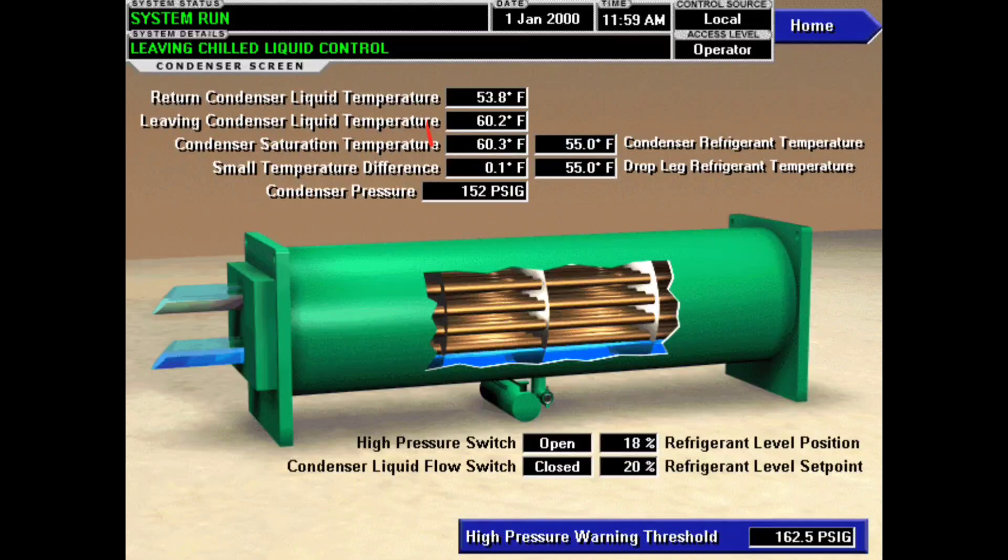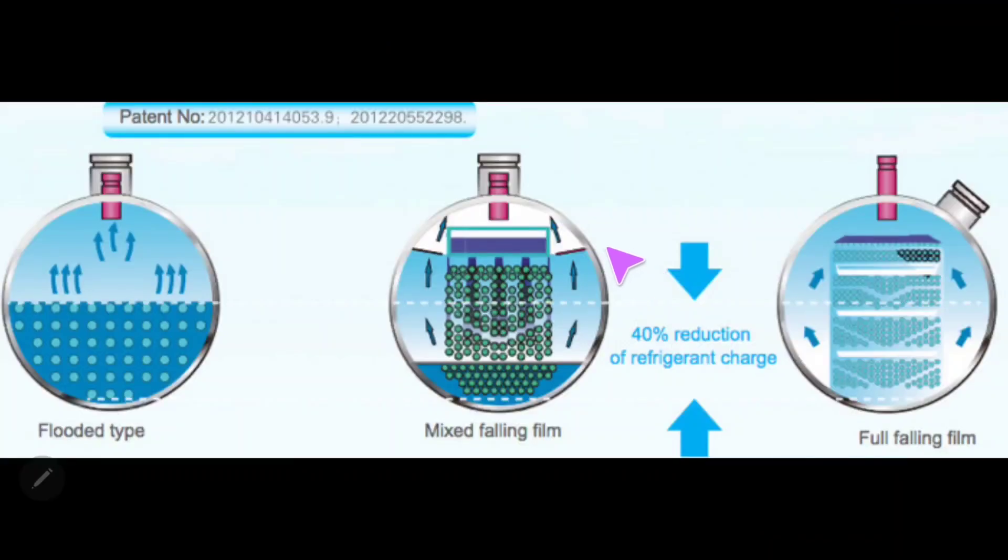What they did for us here is they actually put the calculation right here. These two numbers is what's being calculated: it's the leaving condenser liquid temperature and the condenser saturation temperature subtracted from each other, and that difference gives you your approach value. Small temperature difference is just how York refers to it, but inevitably it means approach.